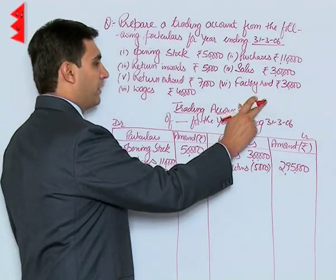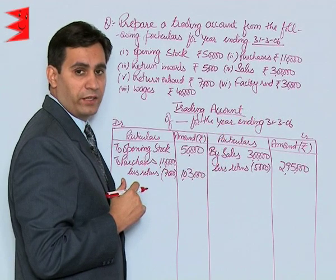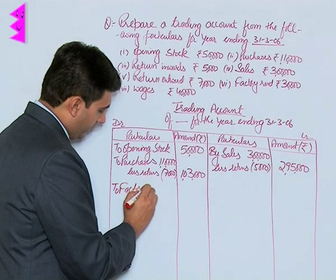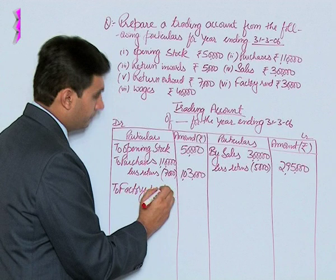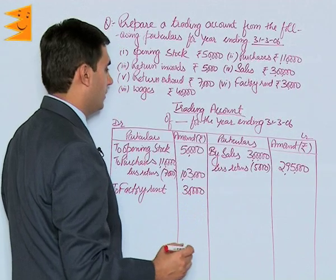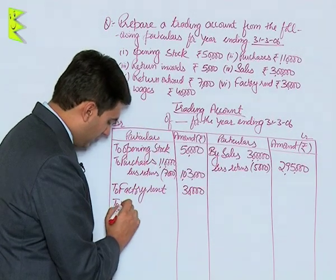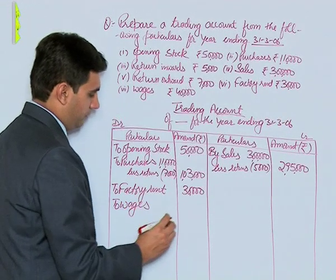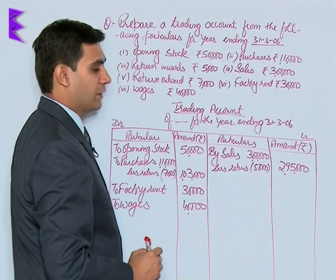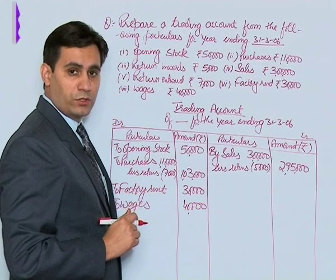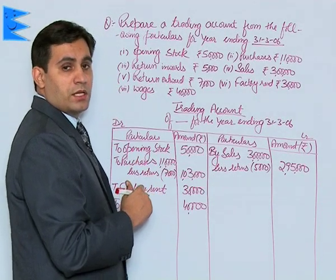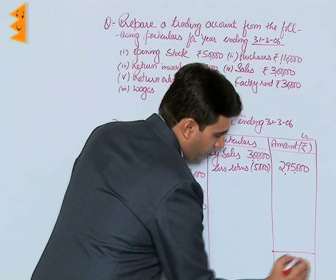Since factory rent relates to the factory, it is a direct expense — factory rent is 30,000. Similarly, wages are a direct expense, so on the debit side wages are 40,000. There is no closing stock in the question; had closing stock been given, it would have appeared on the credit side.